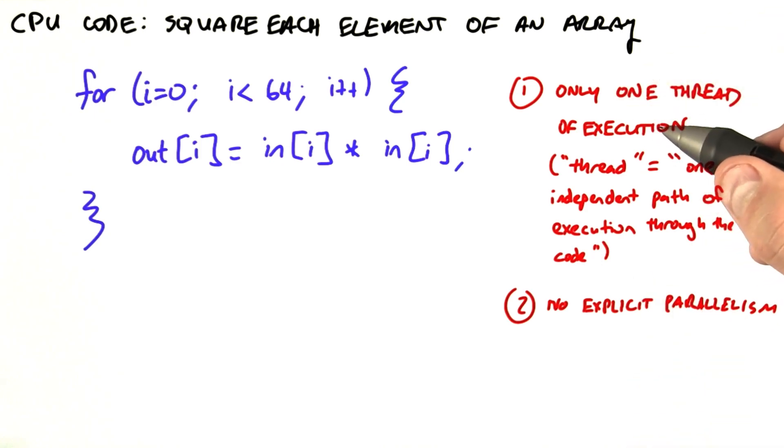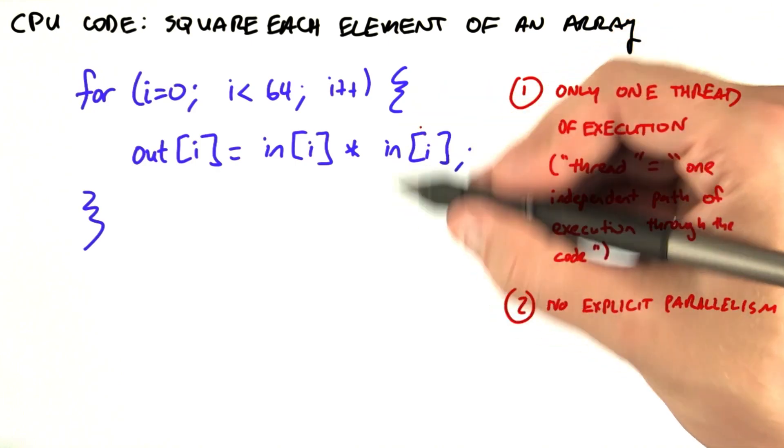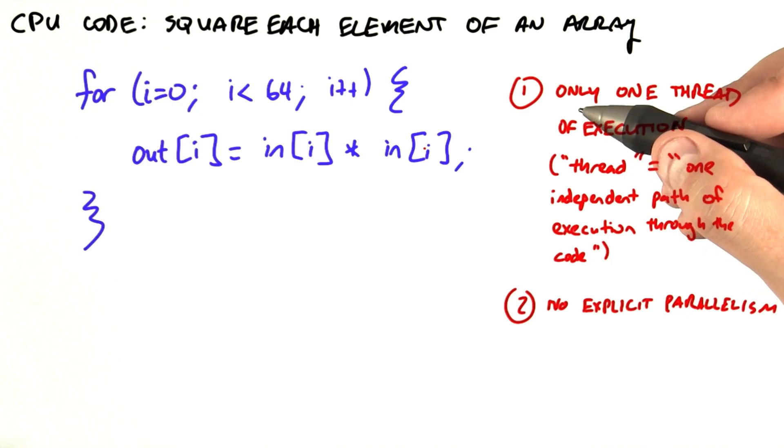Two, note this code has no explicit parallelism. This is serial code. There's only one thread, and it loops 64 times, doing one computation per iteration.